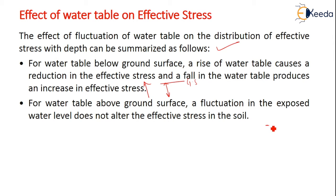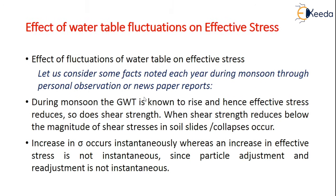If the water table is above the ground surface, this fluctuation is exposed to the water level, which does not alter the effective stress in the soil. The effect on effective stress only applies when the water table is below the ground surface.